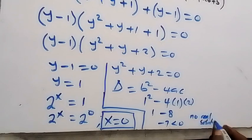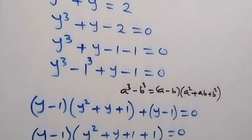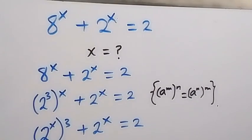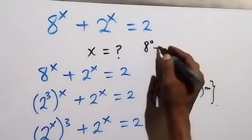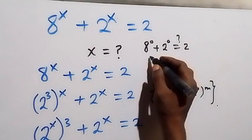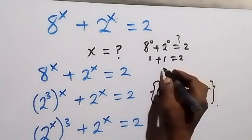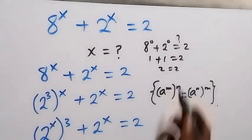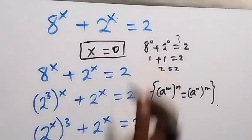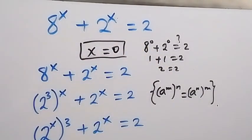So the solution to this problem is x equals 0. We can verify: substituting x equals 0 into 8 to the power of x plus 2 to the power of x equals 2 gives 8 to power 0 plus 2 to power 0. Any number raised to power 0 is 1, so we get 1 plus 1 equals 2, which confirms left-hand side equals right-hand side. Therefore x equals 0 is the solution. Thank you for watching — please share this video, subscribe to my channel, see you next class!